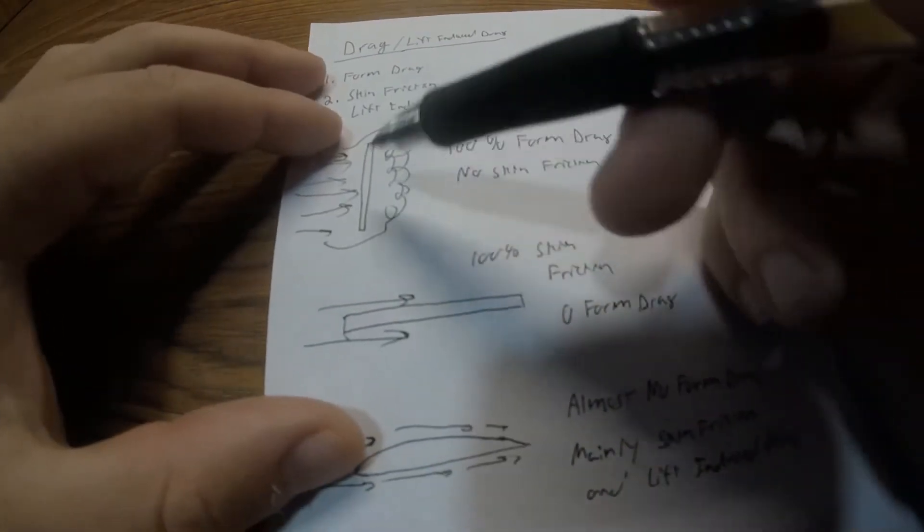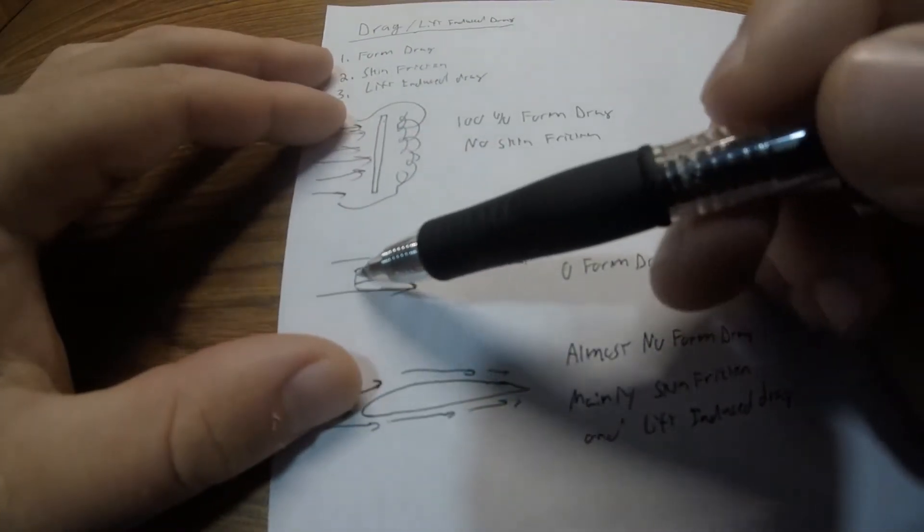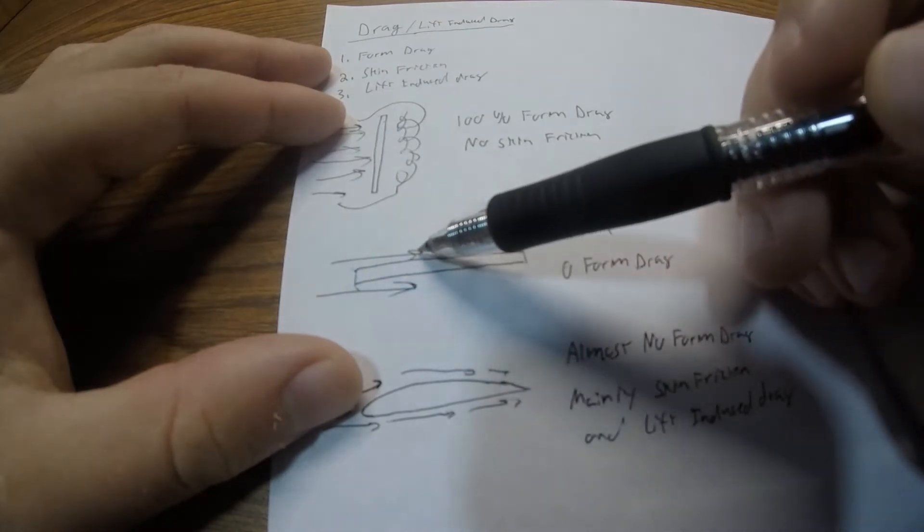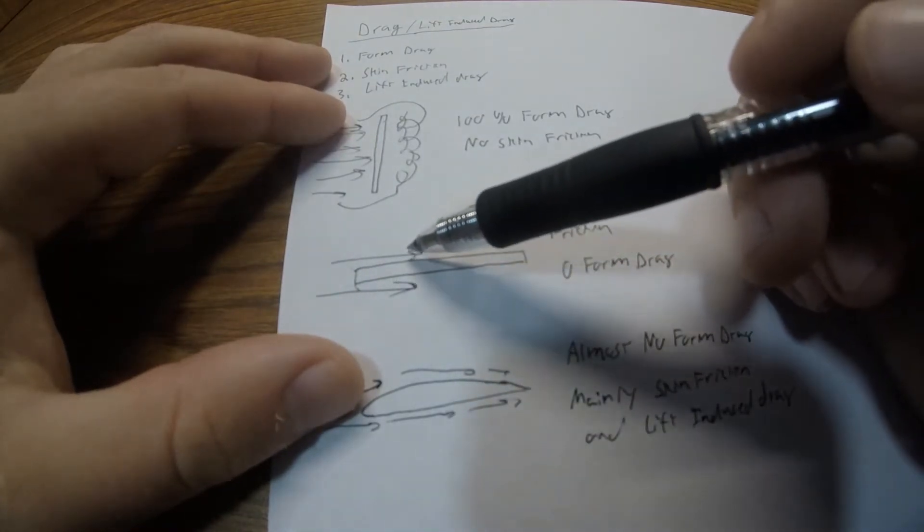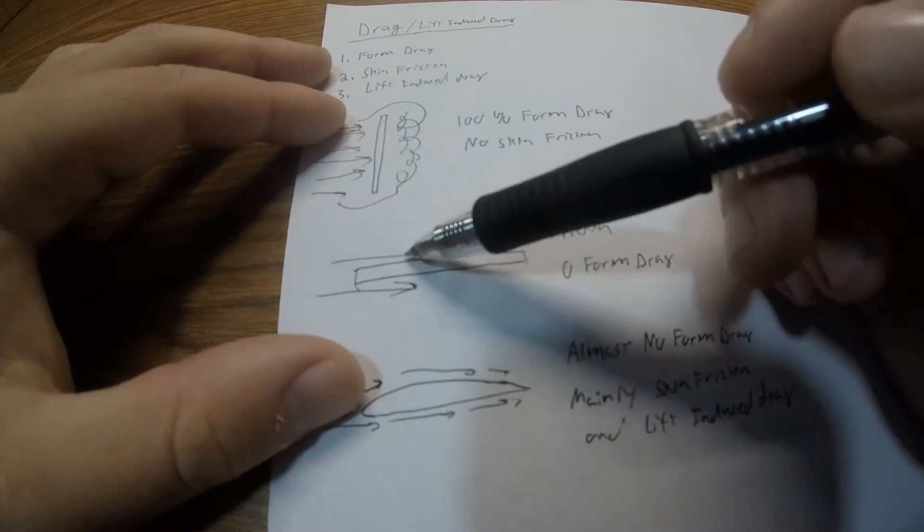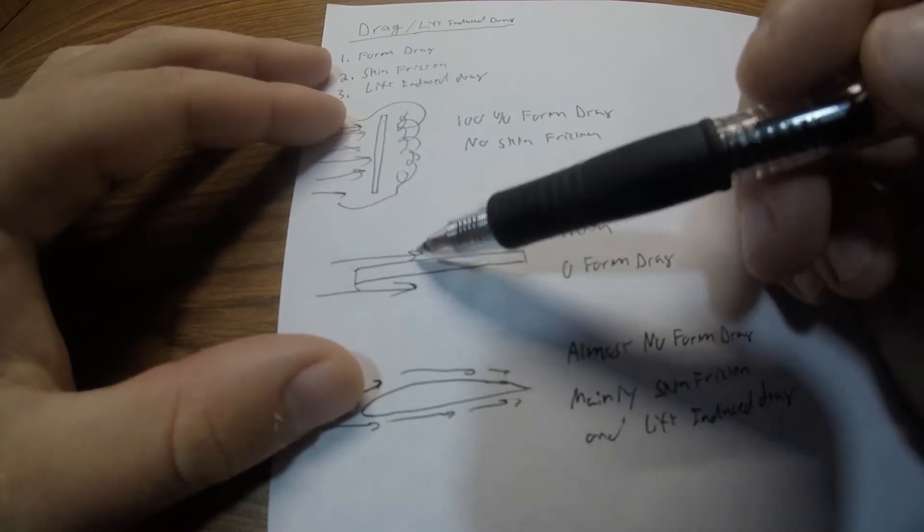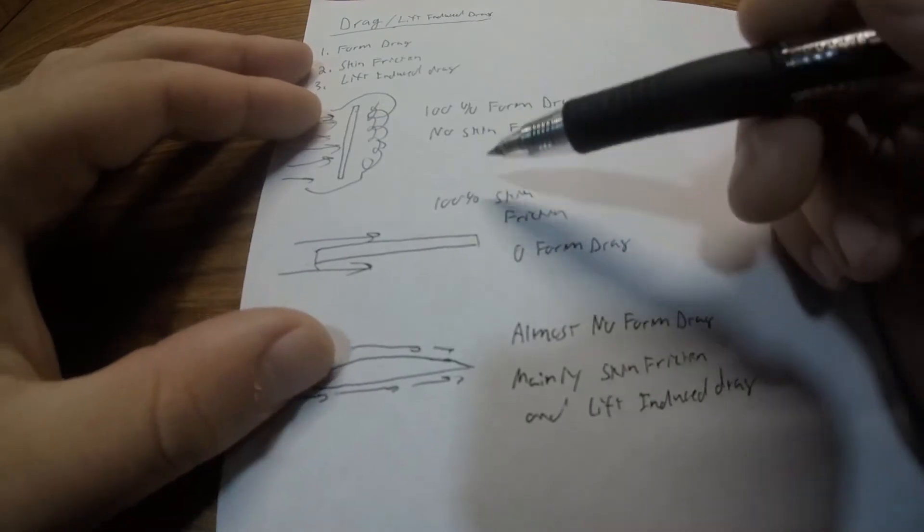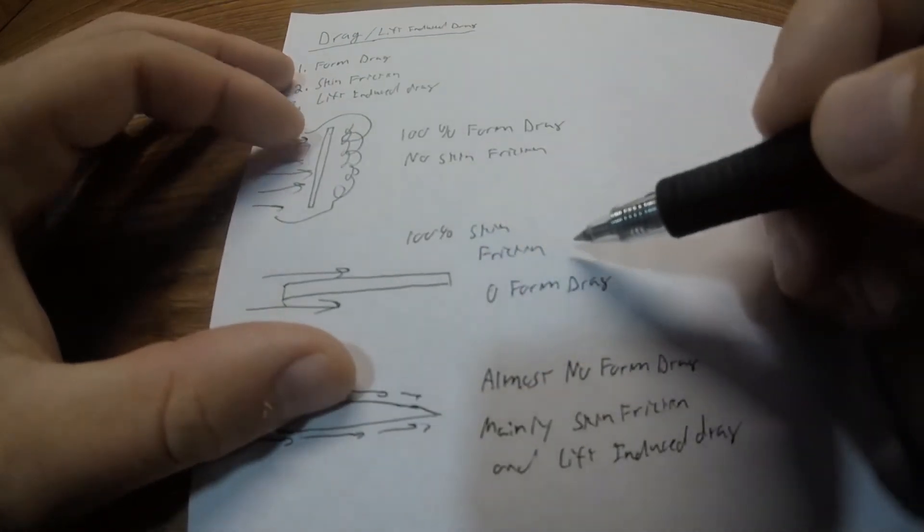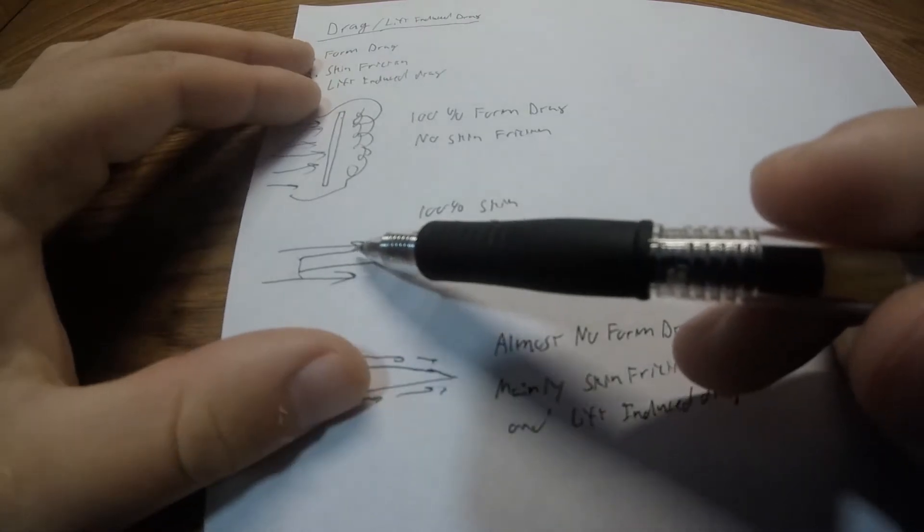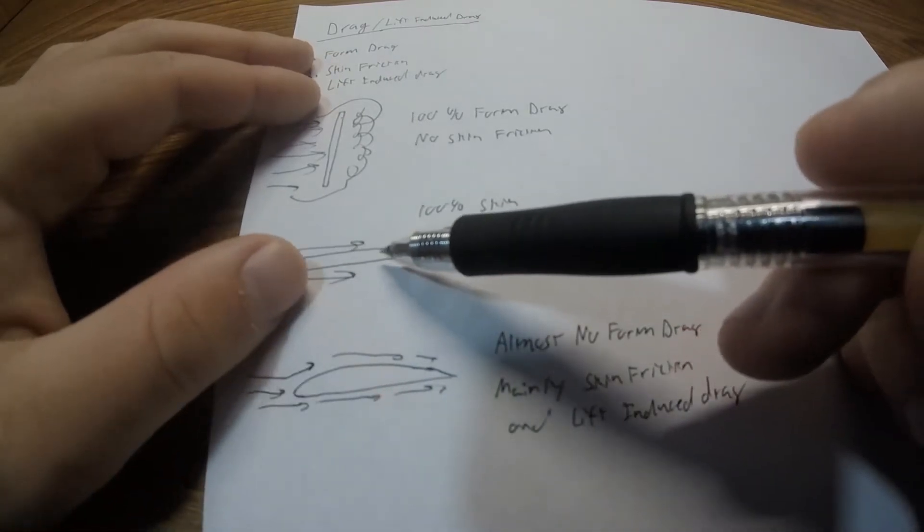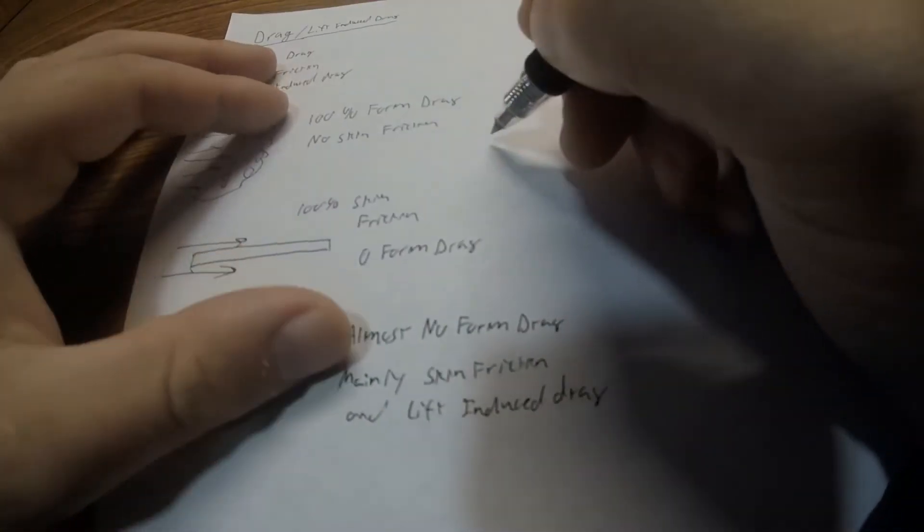But then if we look at, let's say, a very thin flat plate going through the air here, where the air just goes on top and the bottom. Again, there's no lift. The air speed is equal on both sides. The air is not changing any direction. This is basically going to be 100% skin friction drag and zero form drag. Again, this is a very thin plate.